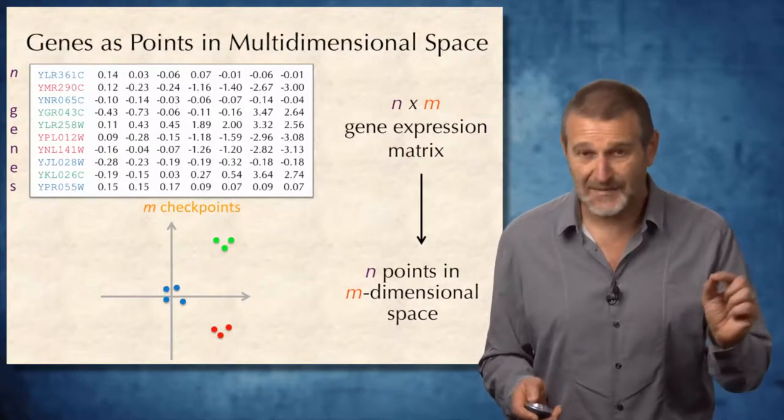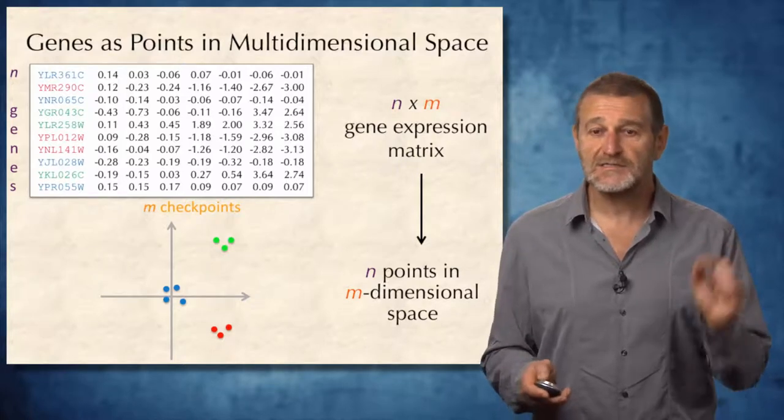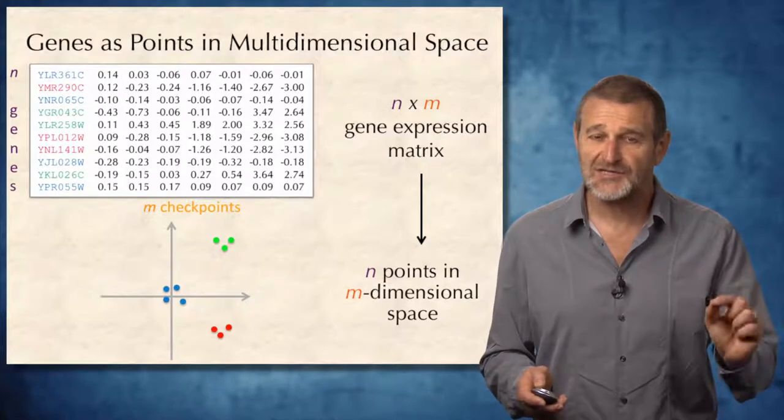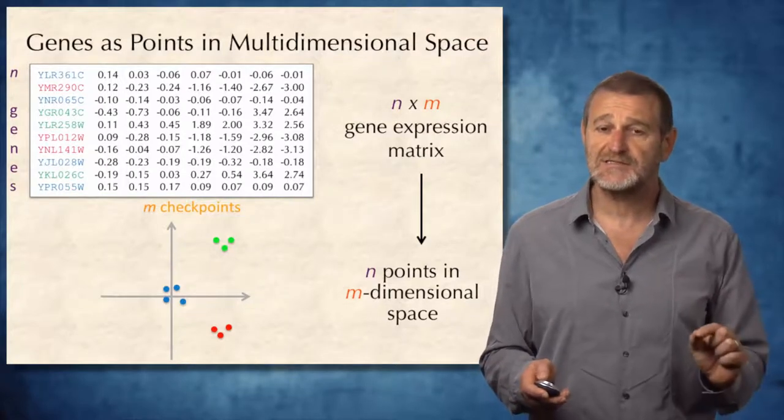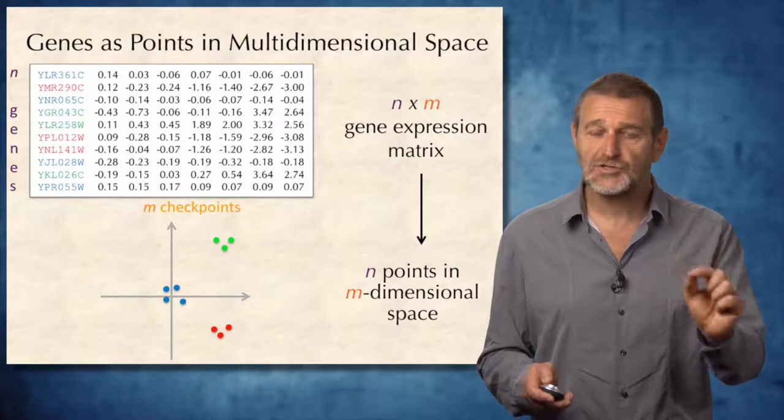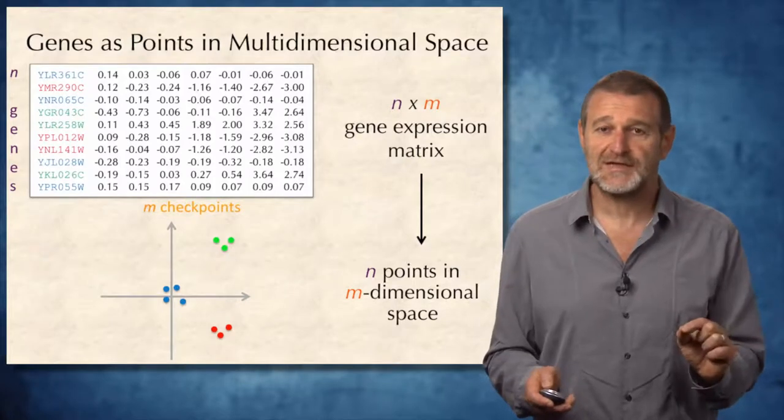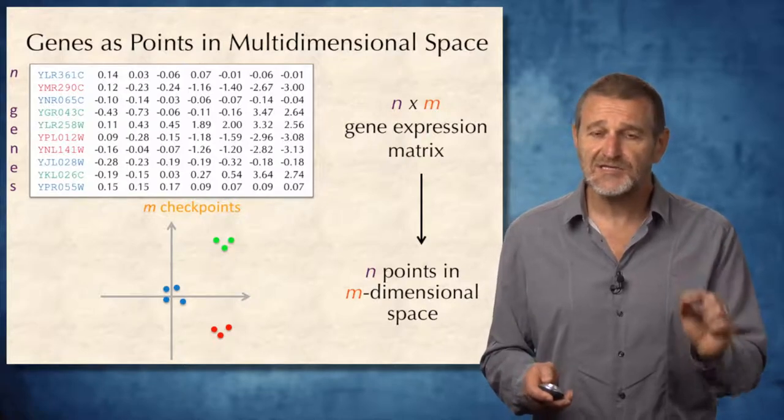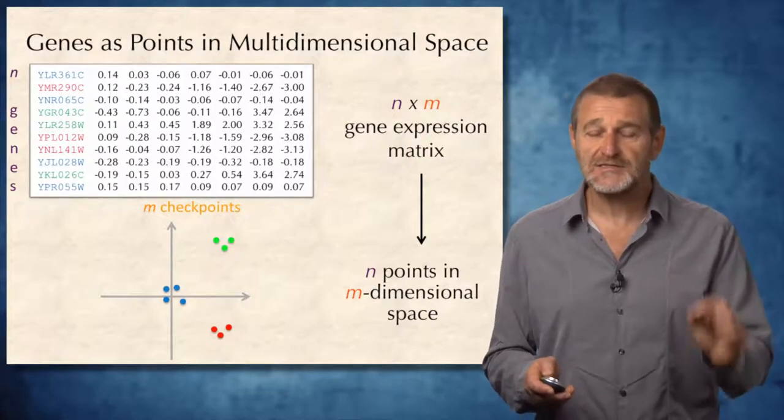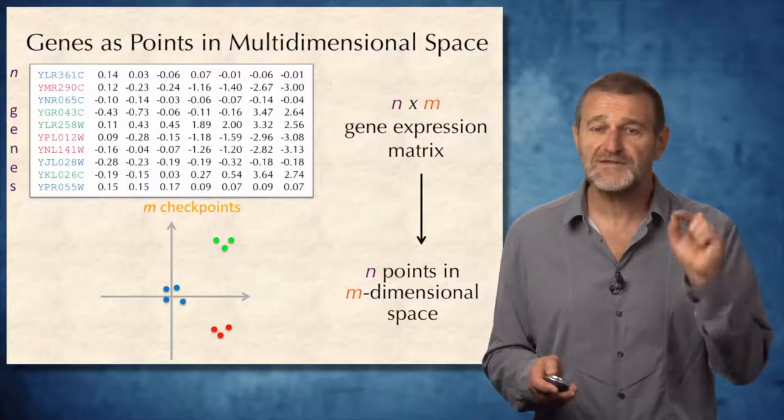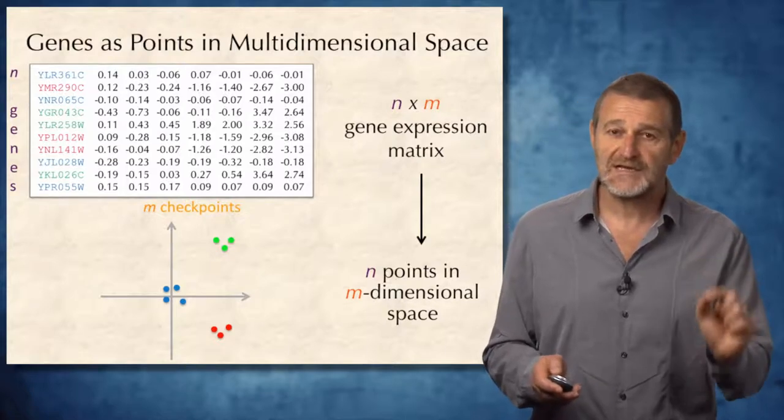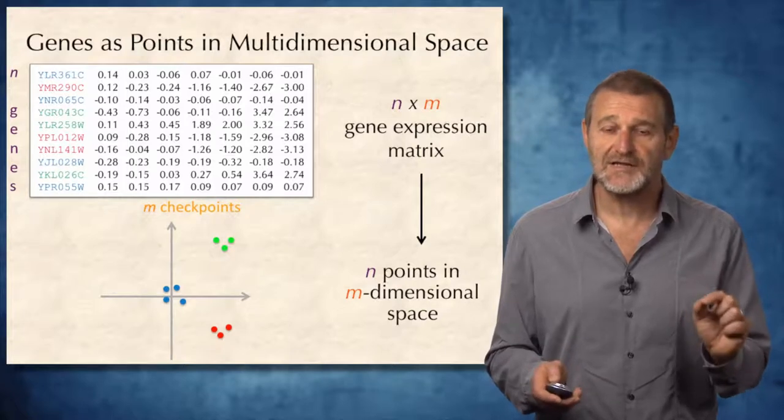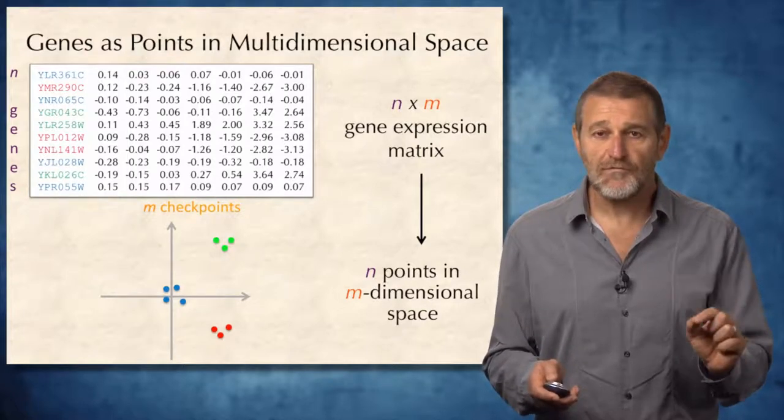However, I am cheating here because our points are actually points in seven-dimensional space. We measured gene expression at seven checkpoints, but here I show these points in two-dimensional space. How have I done it? In fact, the clustering problem is much harder than it looks because there is the so-called curse of dimensionality of studying clustering of points in multidimensional spaces.